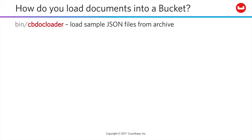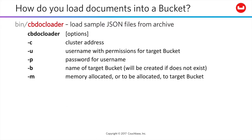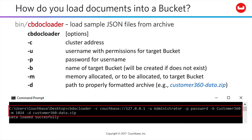We also still support cbdocloader, as we have for some time with Couchbase. This tool allows you to load JSON files from a sample archive that follows a format specified by Couchbase. You provide the cluster address, username, password, and the name of a target bucket — cbdocloader will create it if it doesn't exist — along with the memory to be allocated for that bucket and a path to a properly formatted archive.